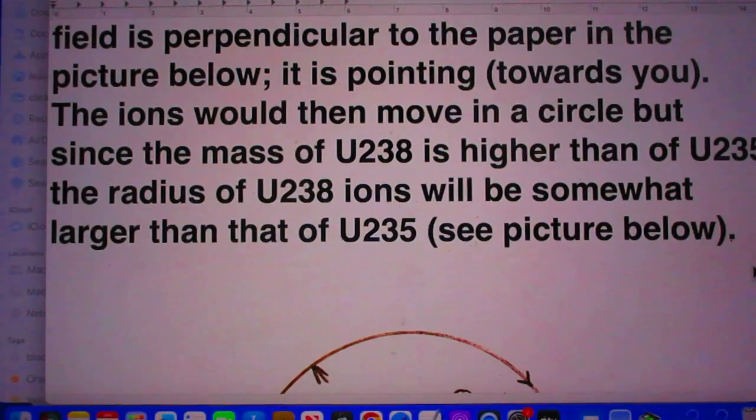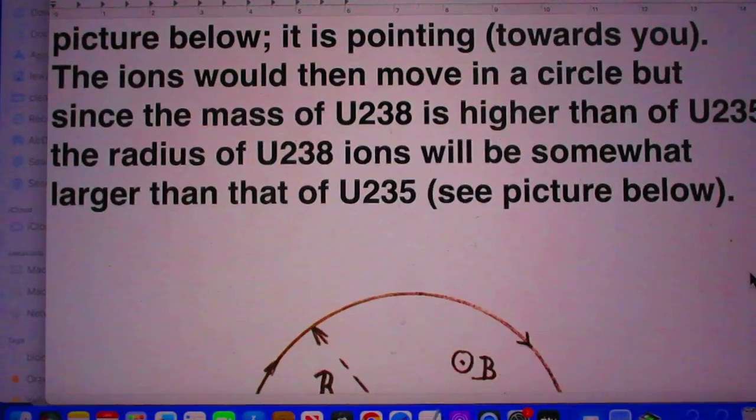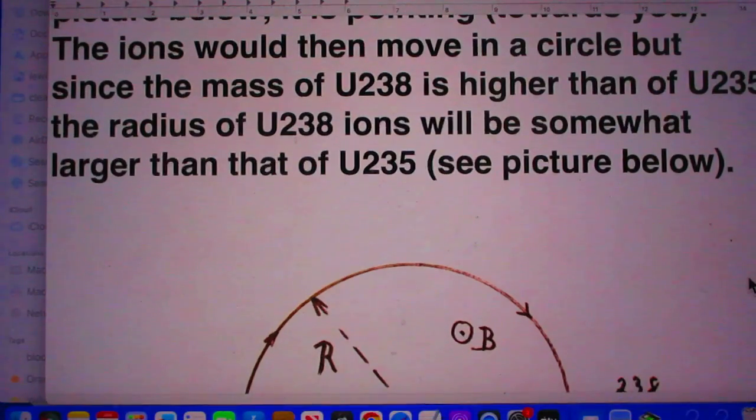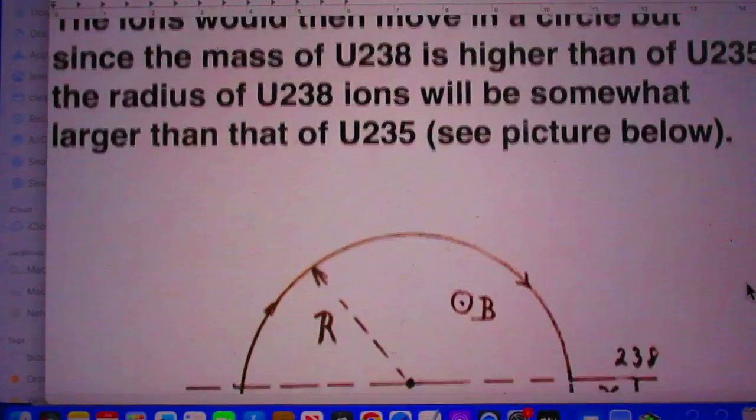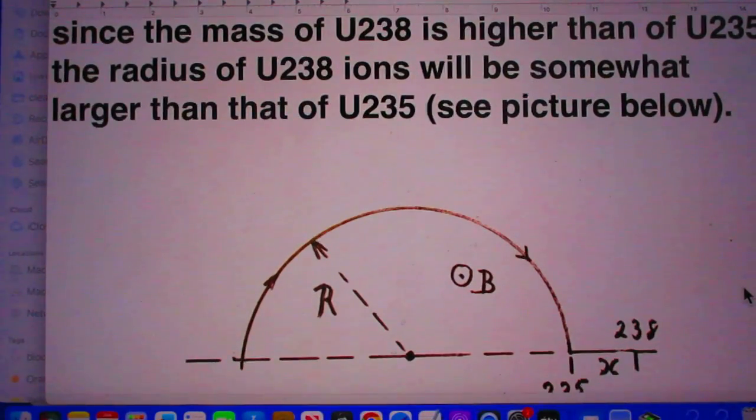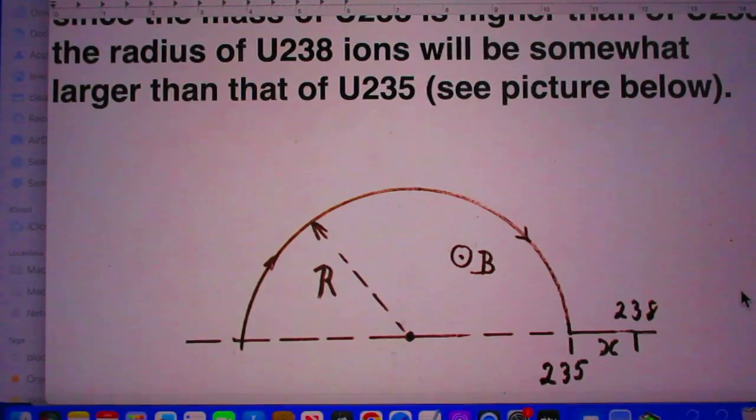The ions would then move in a circle. But since the mass of 238 is higher than of 235, the radius of 238 ions would be somewhat larger than that of uranium-235.